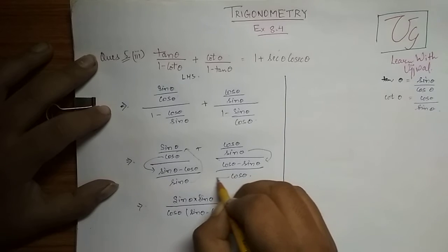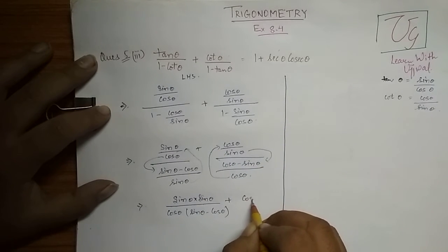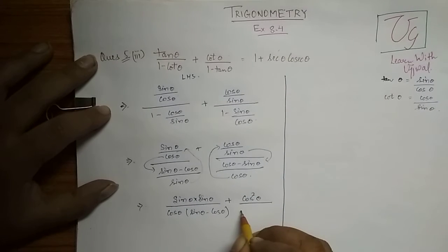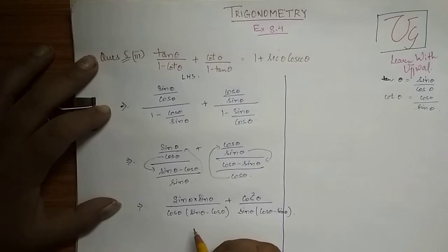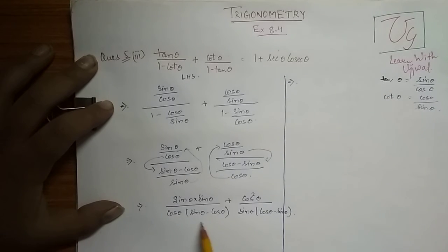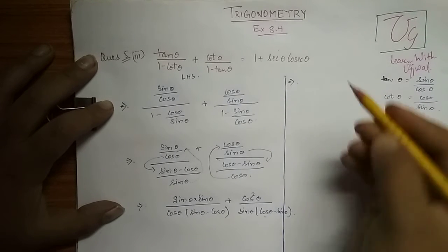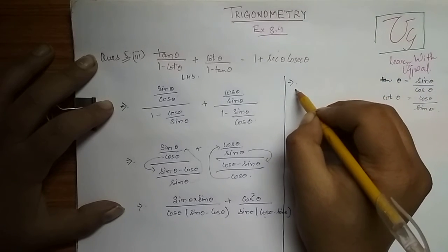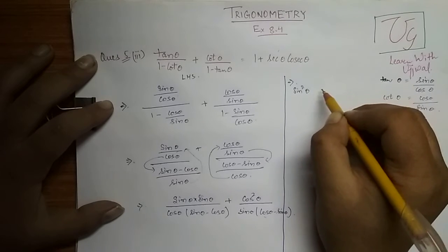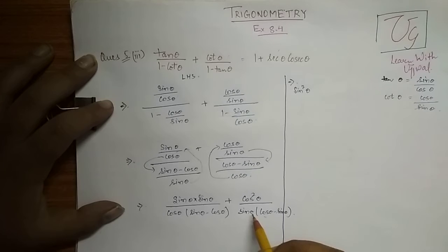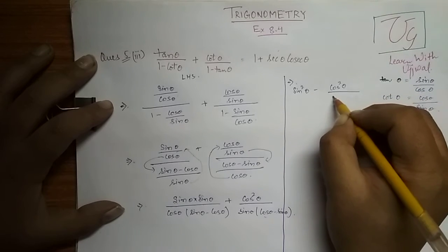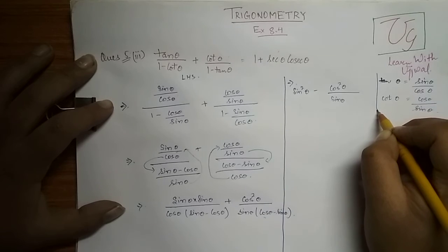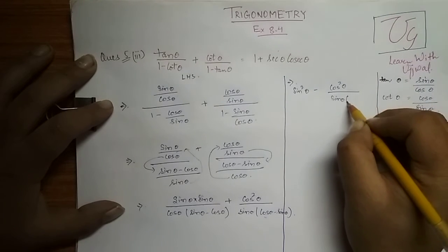The numerator comes up and denominator comes to bottom. So we get sin squared θ upon sin θ cos θ minus cos squared θ upon sin θ cos θ. Now, if we take minus common from the second denominator bracket, we get cos squared θ upon sin θ times sin θ minus cos θ. This makes both denominators have the same factor sin θ minus cos θ.